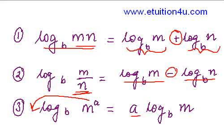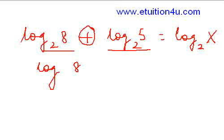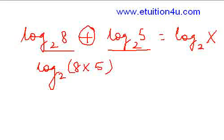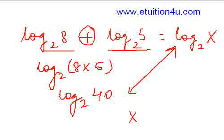Property 1: log is being distributed over 8 and 5, and these two are getting added, so we can write this as equal to log of 8 times 5. This becomes log of 40 to the base 2 is equal to log x. Comparing these two, we get x is equal to 40.